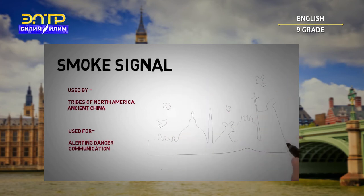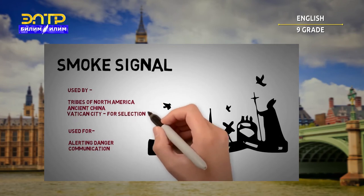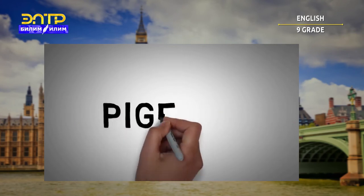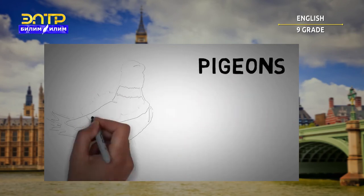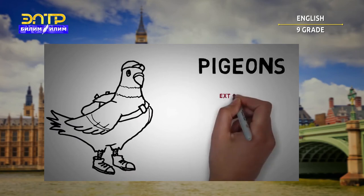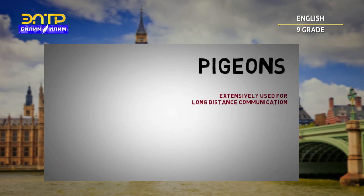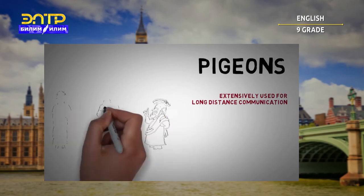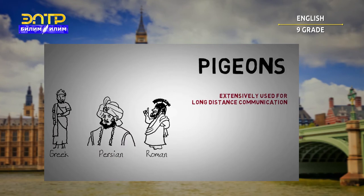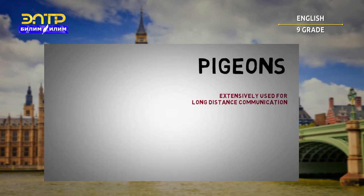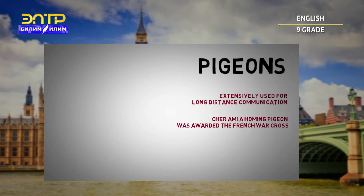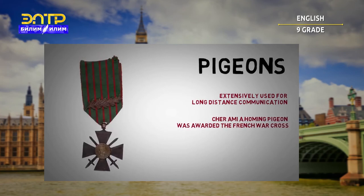The smoke signal is still used in Vatican to indicate the selection of a new pope. Pigeons, due to their natural homing ability, were extensively used for long-distance communication. They were used by Persians, Romans, and Greeks. In the 19th century, pigeons were also used to transmit stock quotations from one city to another. Cher Ami, a homing pigeon, was awarded the French War Cross for her services during World War I.